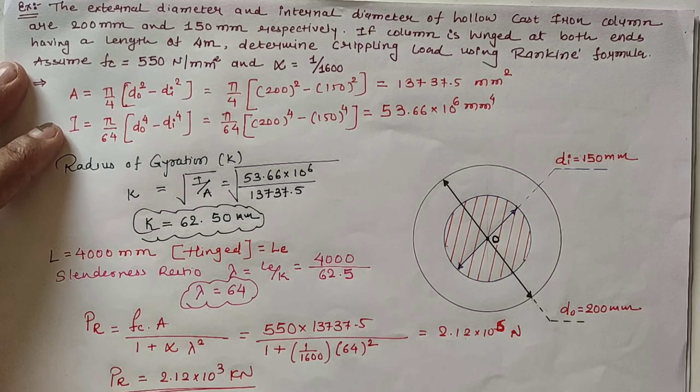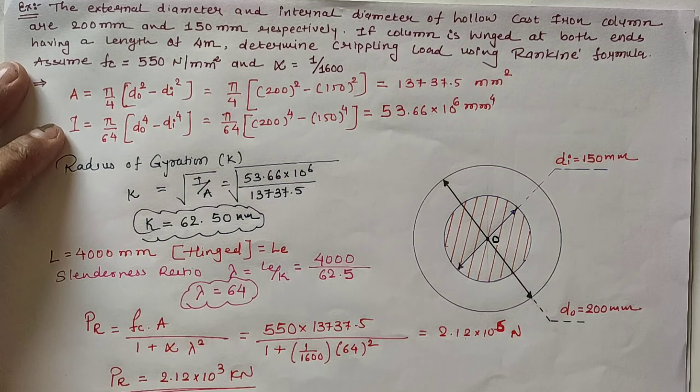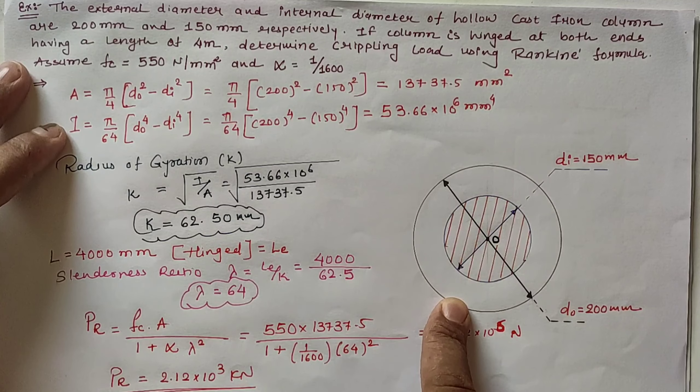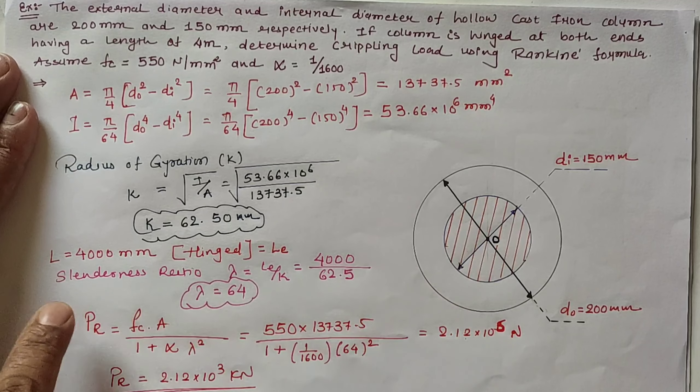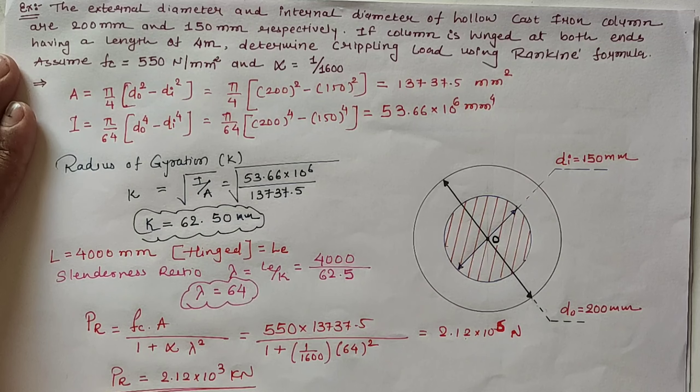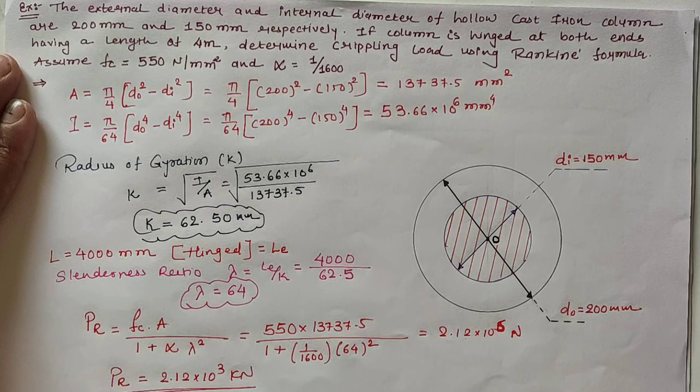For both end hinged condition and according to the given hollow circular column section, the Rankine load is 2.12 × 10³ kN. Thank you.